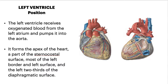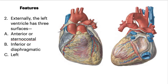The left ventricle receives oxygenated blood from the left atrium and pumps it to the aorta. It forms the apex of the heart, part of the sternocostal surface, most of the left border, the left surface, and the left two-thirds of the diaphragmatic surface. Externally, the left ventricle has three surfaces: the anterior or sternocostal surface, the inferior or diaphragmatic surface, and the left surface.